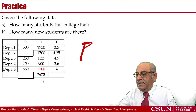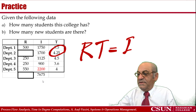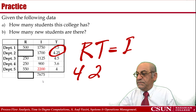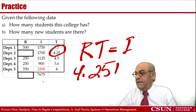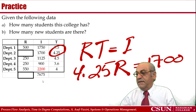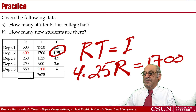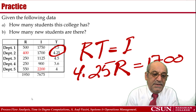Again, throughput times flow time equals inventory. Flow time is 4.25, throughput is unknown, and inventory is 1,700. One equation, one unknown — we get 400 for that department. Then we add these numbers and get 1,950 as the total number of incoming students.